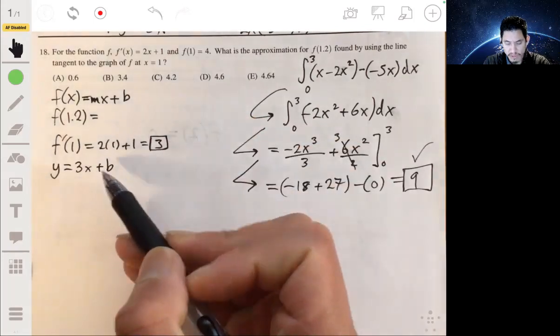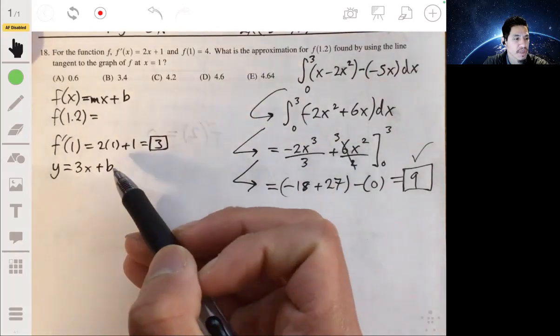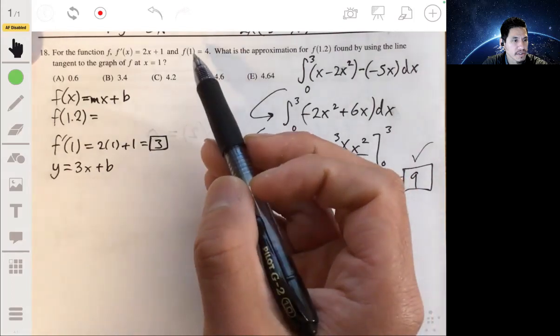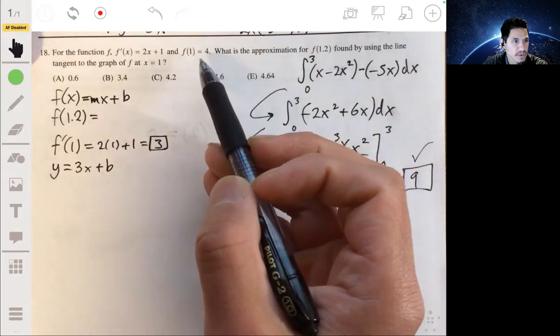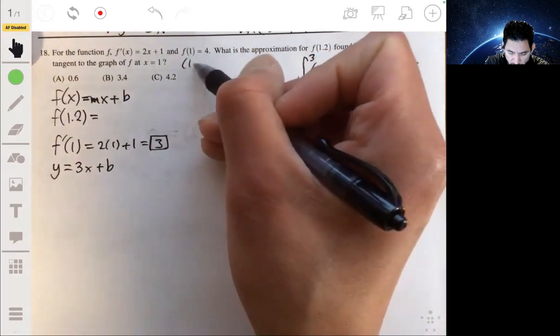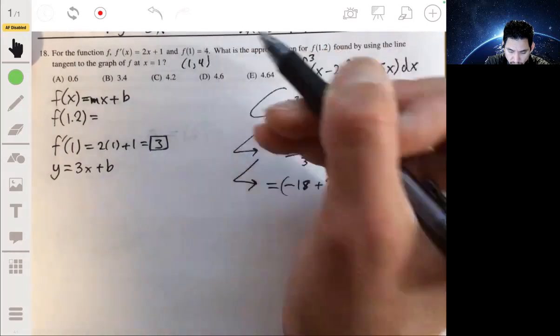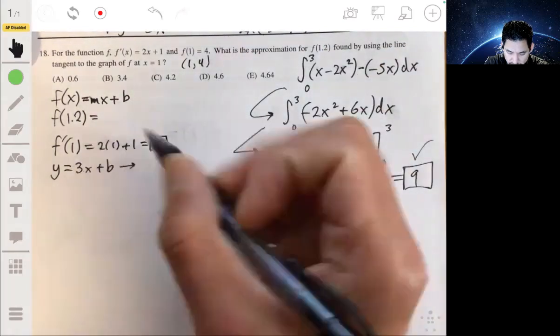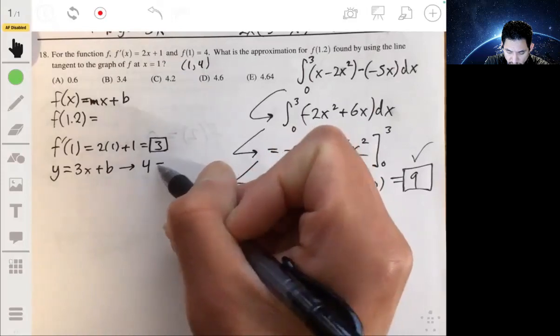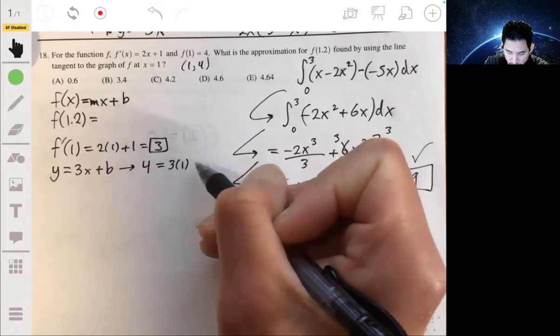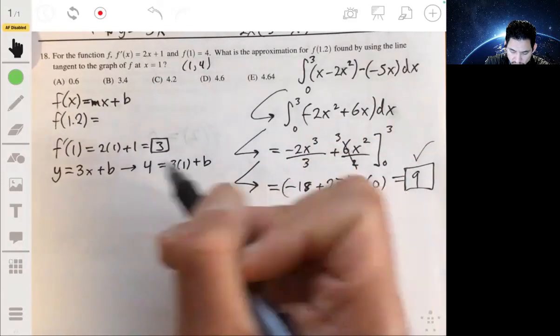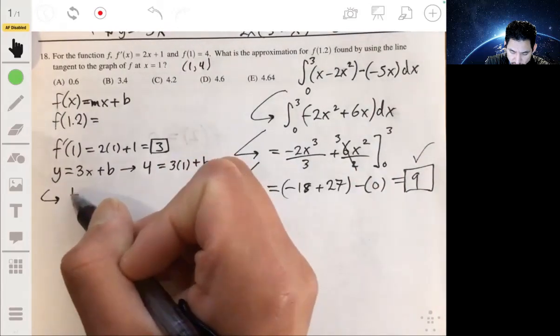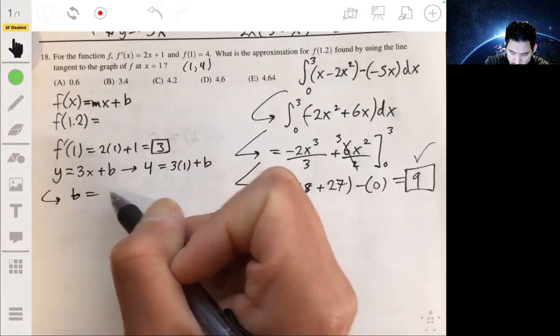So then right now we know that our tangent line will have a slope of 3, but we still need to find the y-intercept. We can find it by using the point 1, 4, because this 1, 4 tells you it goes to the point 1, 4. So we just set y equal to 4, x equal to 1, and then solve for b. And then b here will be equal to just 1.